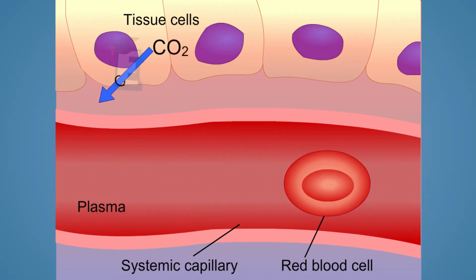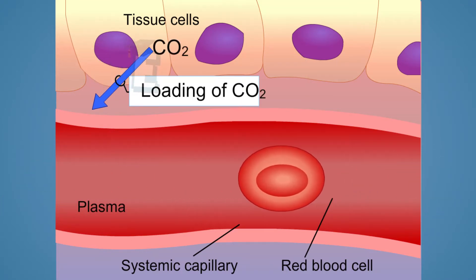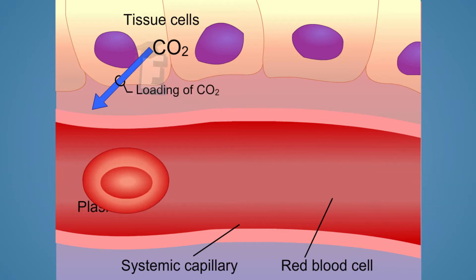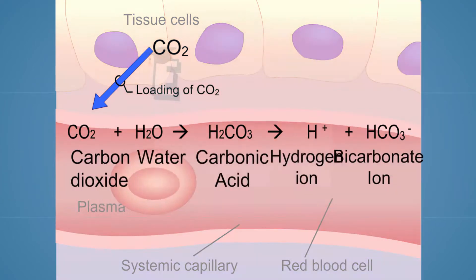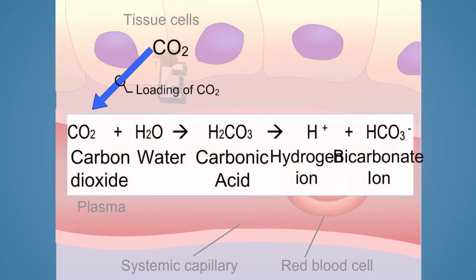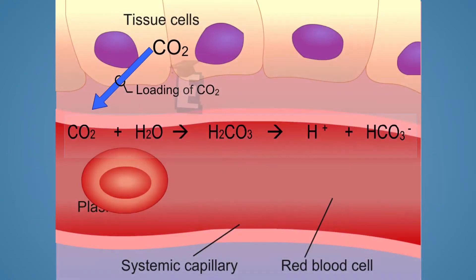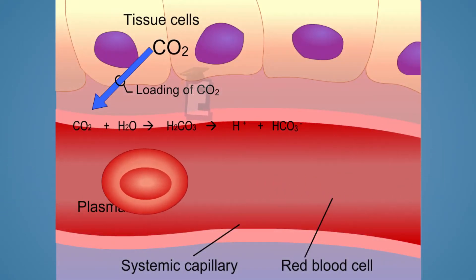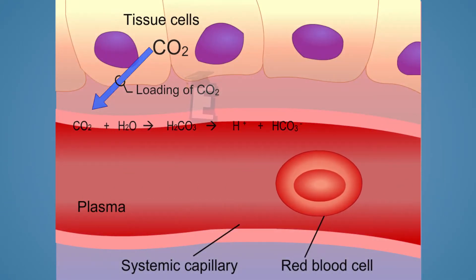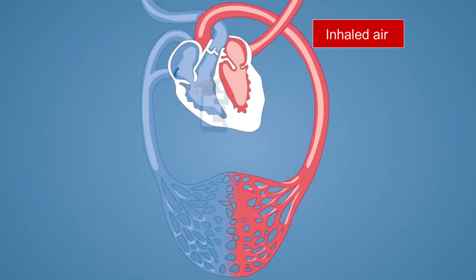Together with the oxygen diffusion, carbon dioxide is also diffused from the tissue to the blood vessel. The oxygen is more diffused by hemoglobin, so 75 percent of carbon dioxide is dissolved by the blood plasma before it flows through the bloodstream.